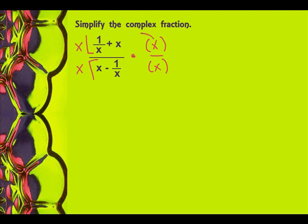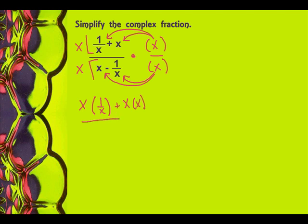Remember, that means I'm going to multiply everything in the numerator by x and everything in the denominator by x. So let's do that. I'm going to have x times 1 over x, plus x times x, over x times x minus 1 over x times x.